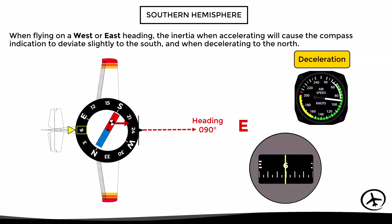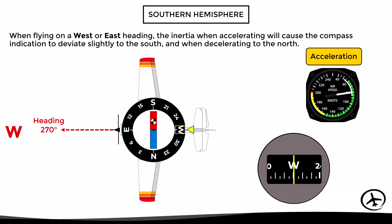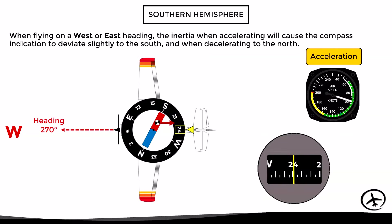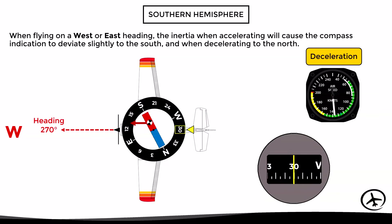This deceleration effect will occur as long as the aircraft continues to decelerate. Once deceleration finishes and constant speed resumes, the inertia disappears and the compass gradually returns to the correct heading indication. The same effect is present when the aircraft flies to the west with heading 270. If the aircraft accelerates, the compass will indicate a turn to the south until the acceleration finishes, then inertia disappears and the compass returns to the correct heading. If the aircraft decelerates, the compass will indicate a turn to the north until constant speed is maintained, then the compass returns to the correct heading.